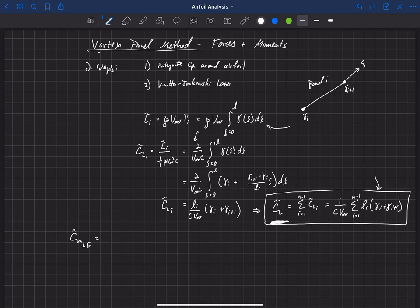So that's going to be equal to minus 1 over 3C squared V infinity times the summation from i equals 1 to n minus 1 of Li times 2xi gamma i plus xi gamma i plus 1 plus x of i plus 1 gamma i plus 2xi plus 1 gamma i plus 1 all times the cosine of alpha.